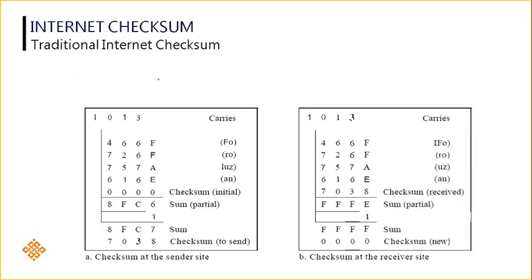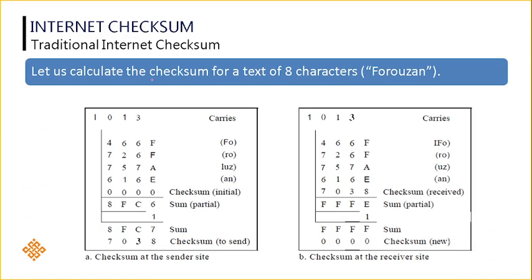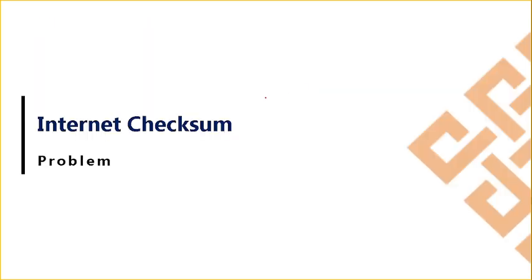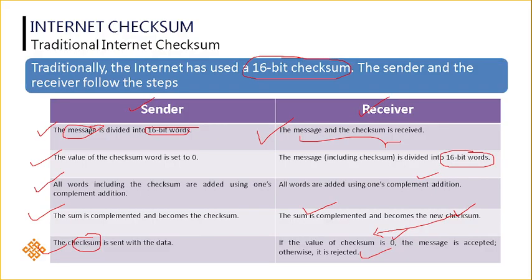I will try to explain all these steps by taking one example. I am calculating the checksum and the entire process by taking the computer network author name, that is Forouzan. The same data I am sending — this is the message I am sending: Forouzan. The first step is the message is divided into 16-bit words.